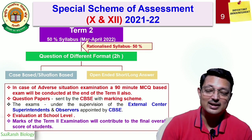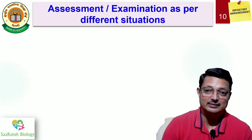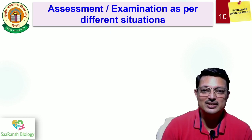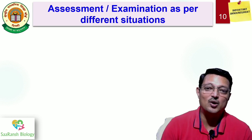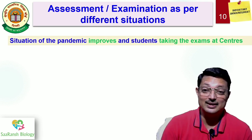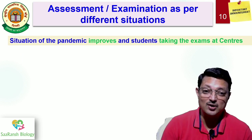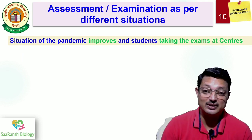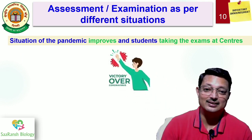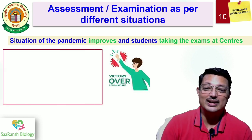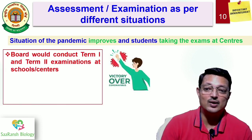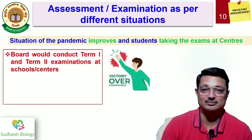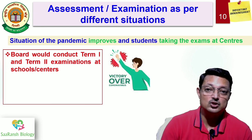Now we consider various probability scenarios. If the pandemic improves and students are able to come to centers for both terms, assuming an optimistic and realistic outcome — victory over COVID — then the board will conduct both term 1 and term 2 examinations at schools or centers under the guidance of superintendents and observers.